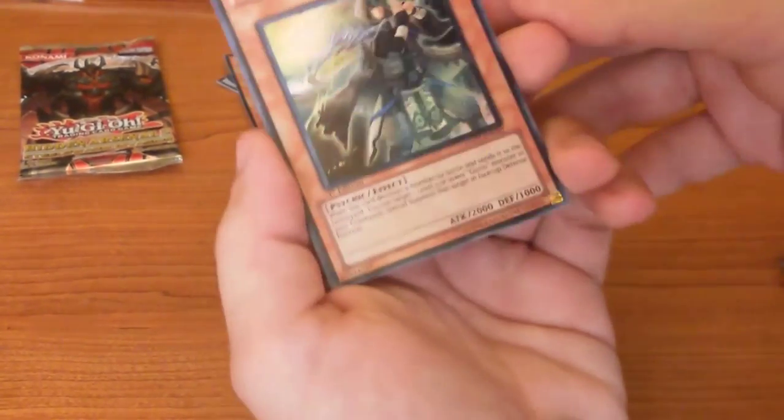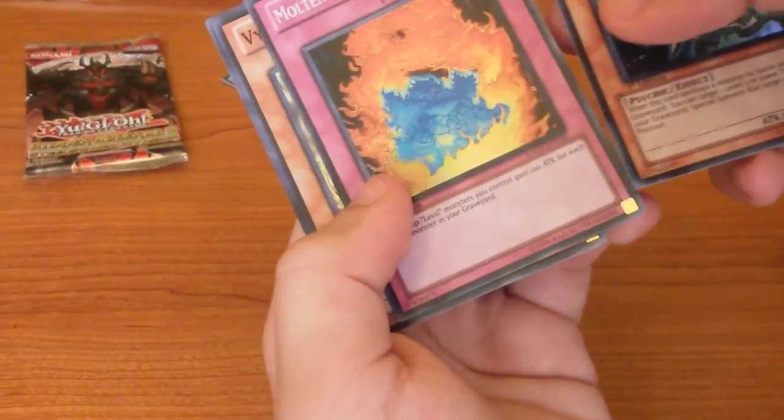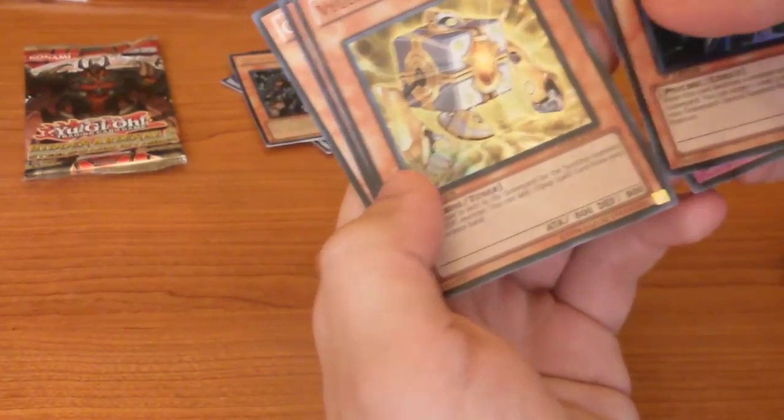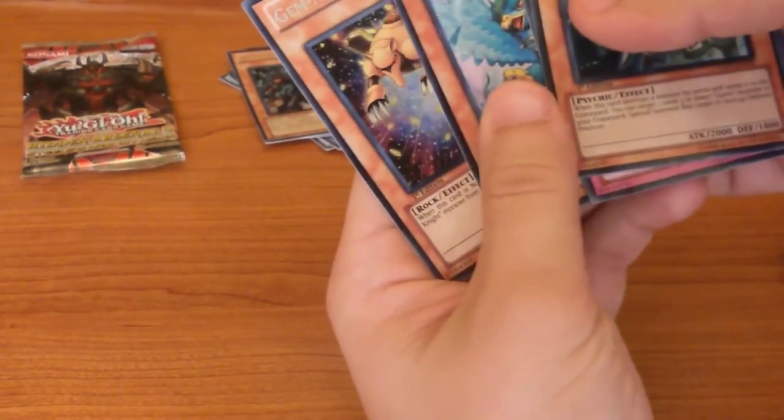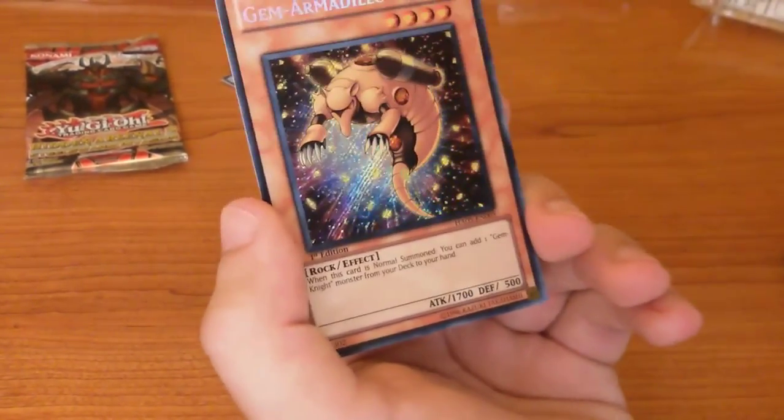Left Wind, Sage of Gusto, Molten Whirlwind Wall, Vylon Cube. Nice. Gusto Guldos and Gem Armadillo. I think this is like the most expensive card in these booster packs.